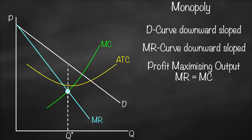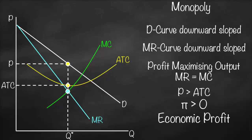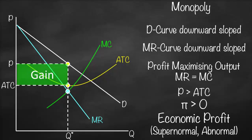From Q*, I go up until I intersect with the demand curve, then move horizontally to get the price. To find profit, I go up until I intersect with average total cost and move horizontally to get the ATC. Since price is greater than average total cost, our profit is greater than zero — because profit equals quantity multiplied by (price minus average total cost). This means we create economic profit, also called supernormal profit or abnormal profit.